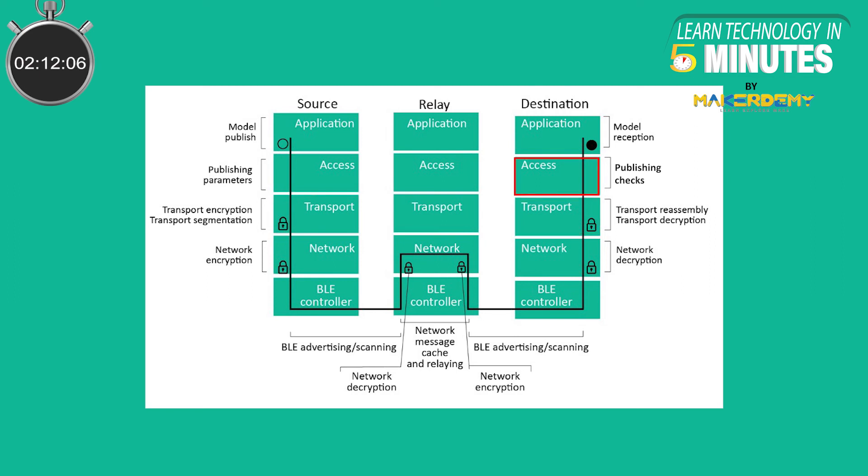The access layer checks the operation code, application key and destination address and passes the message to all eligible models.